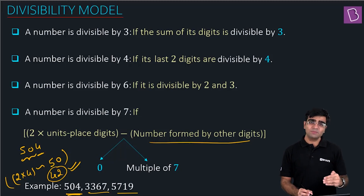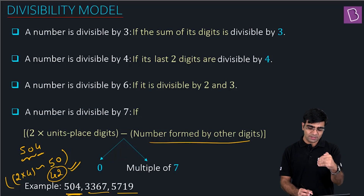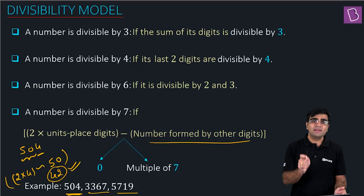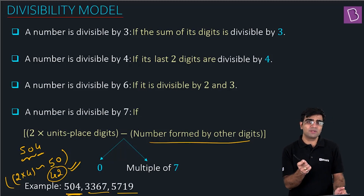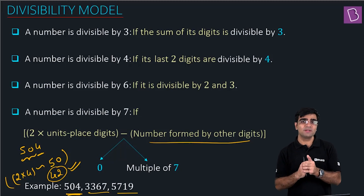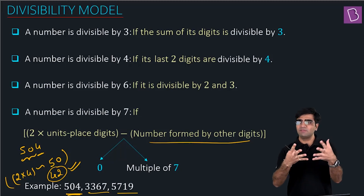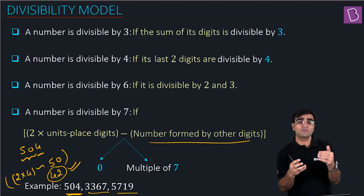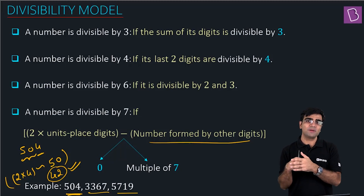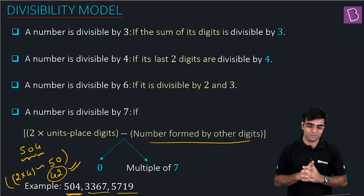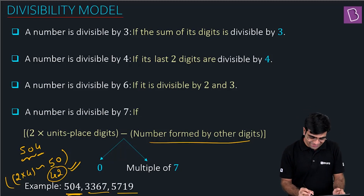Two times the unit place digit and its difference with the number formed by other digits. Don't get confused with the minus sign — it's the difference we talk about here, and the difference has to be positive. Difference is always positive — it's always higher minus lower, like in physics where current flows from higher to lower potential.